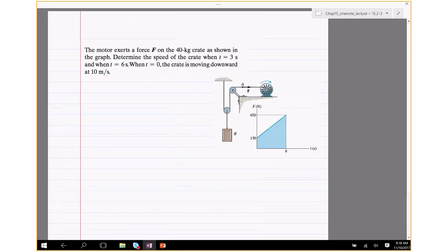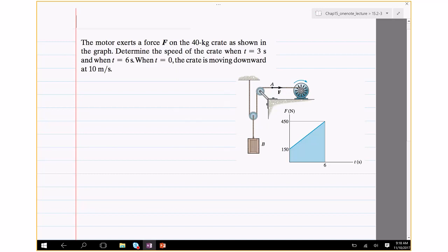Here is the first problem. So the motor exerts a force F on the 40 kg crate, so this is 40 kg. Determine the speed of the crate when t is 3 seconds and when t is 6 seconds. When t equals 0, the crate is moving downwards at 10 meters per second. So at t equals 0, v is the velocity of the crate is 10 meters per second downwards. So the force profile is also given to you here. So it's not a constant force, it's actually linear. Starts off at 150 and goes all the way to 450 in 6 seconds.